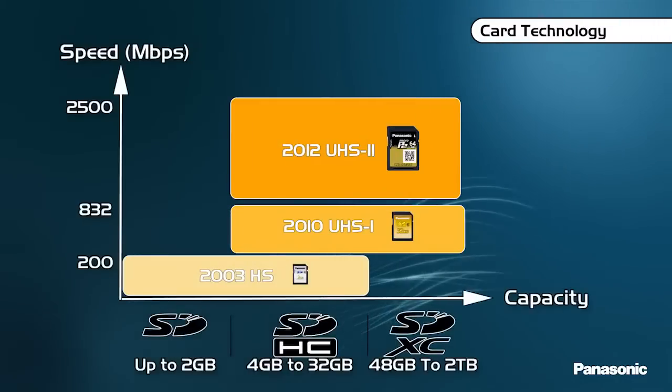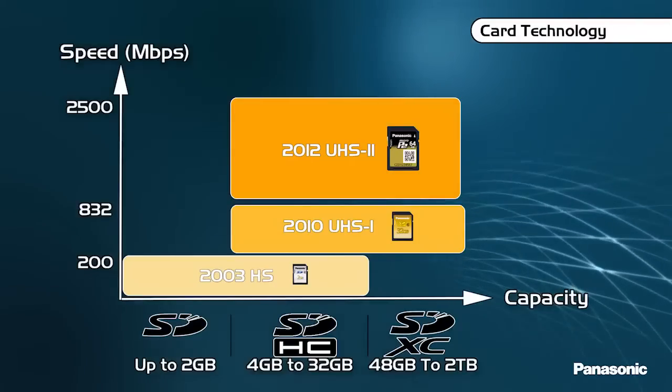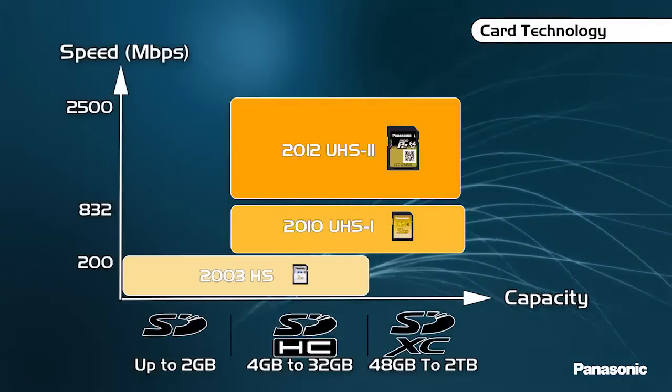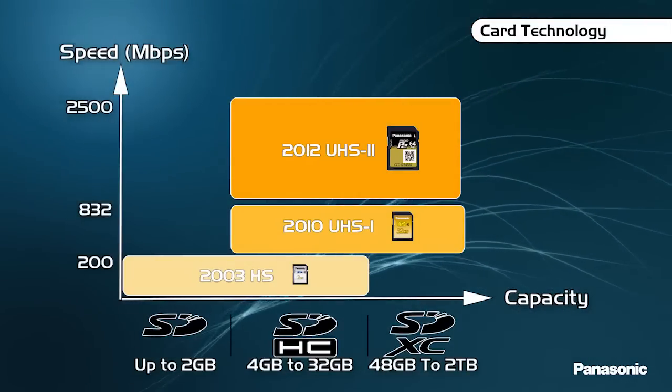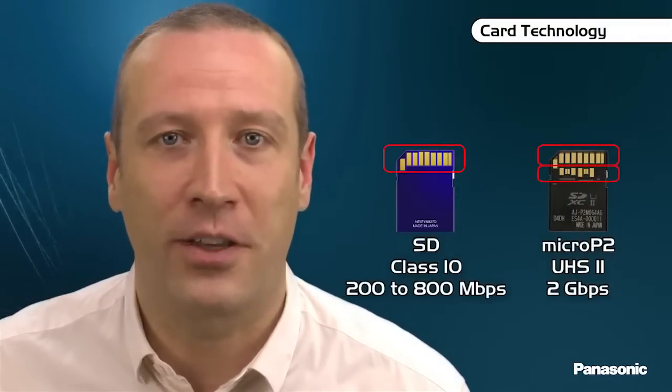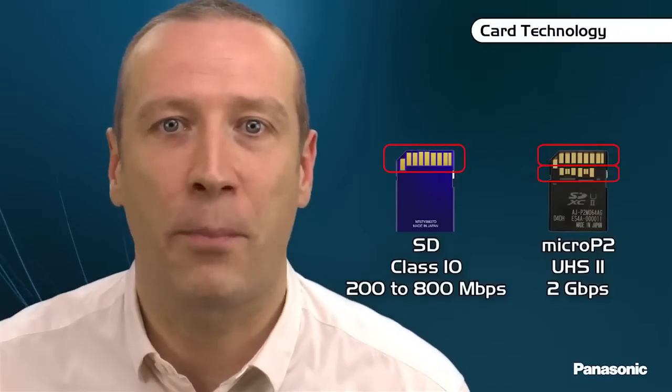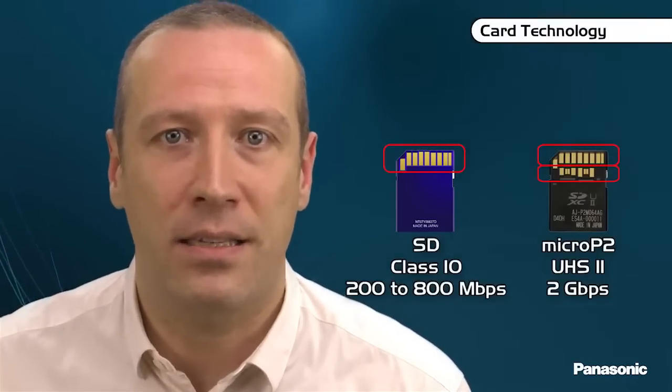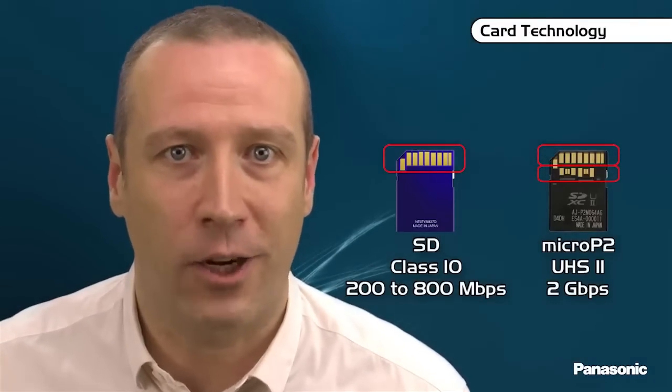The Micro P2 card is based on the UHS-II SDXC standard. SDXC refers to the capacity of the card and UHS-II, ultra-high-speed 2, refers to the technology that ensures high-speed transfer. The UHS-II cards have two rows of connectors. The one on the top is similar to the current SD cards and ensures compatibility with any SDHC or SDXC card reader.